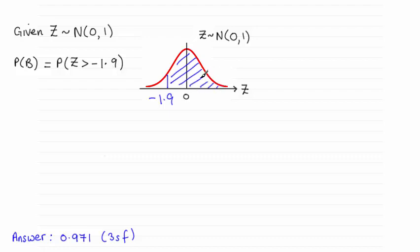We'd expect the answer to be greater than 0.5 because I've shaded more than half of the graph in. That's always useful as a valuable check when we get our answer.